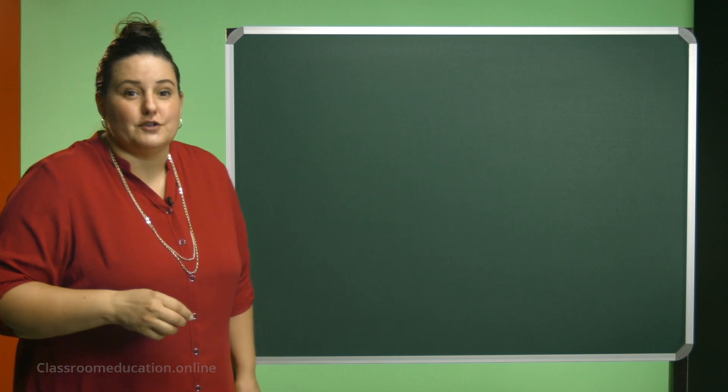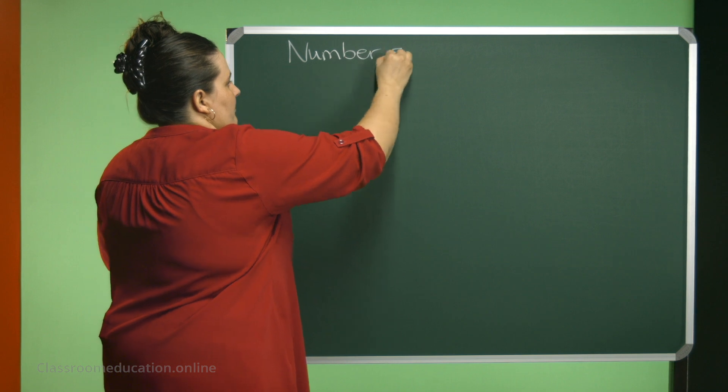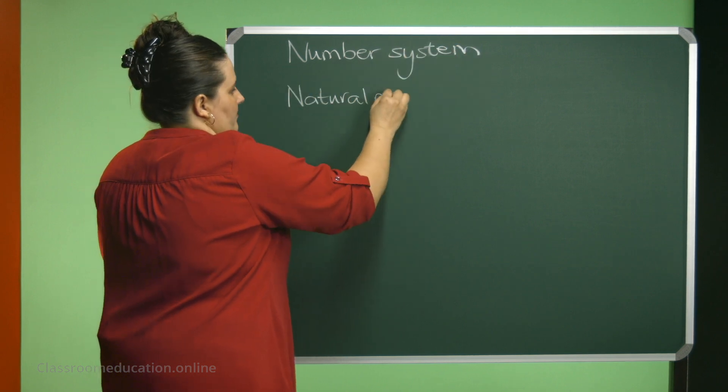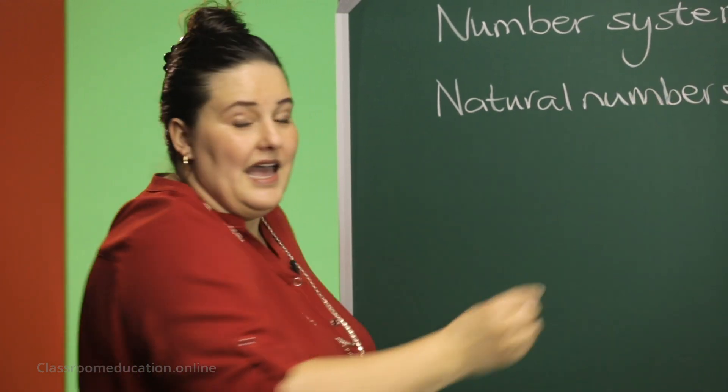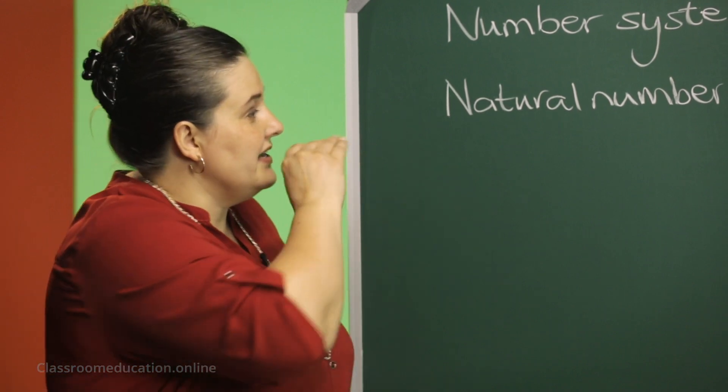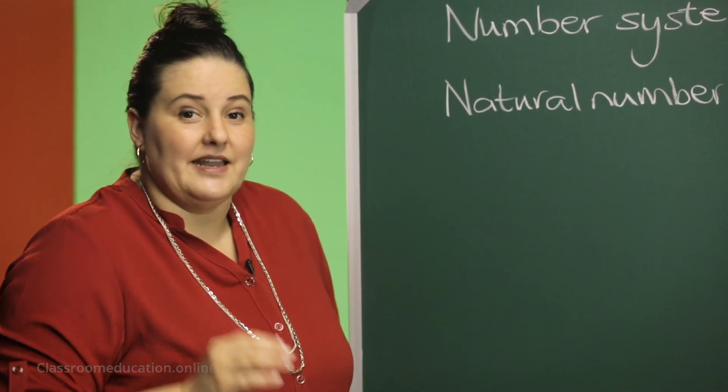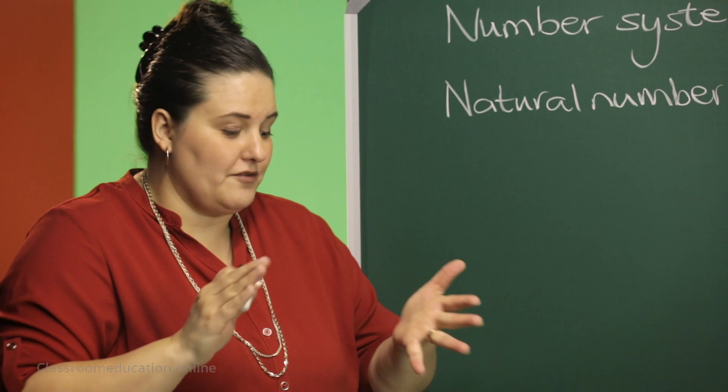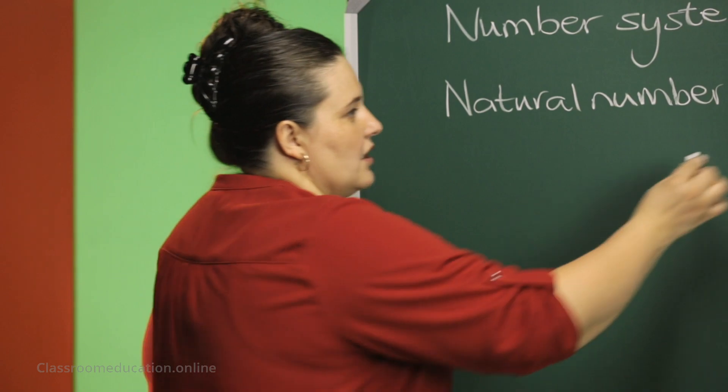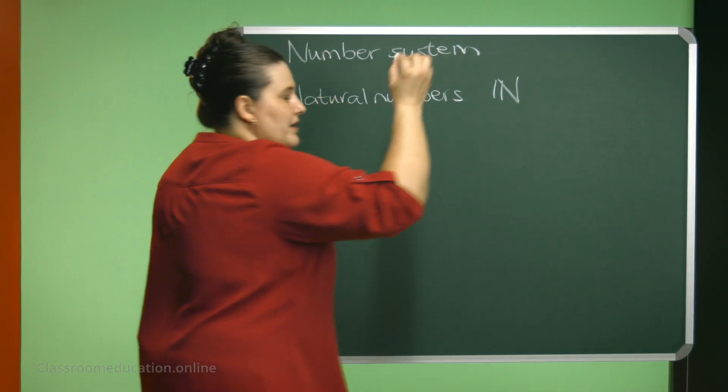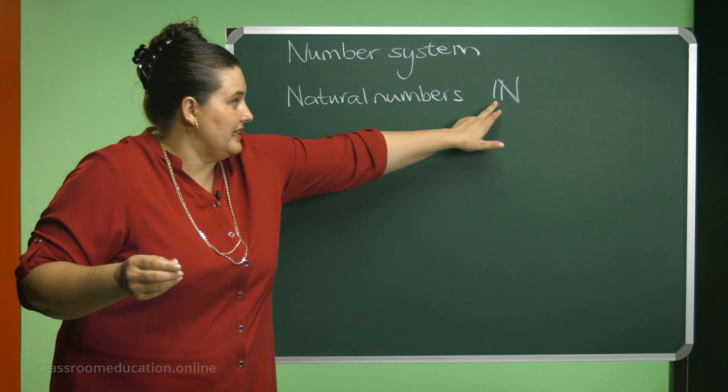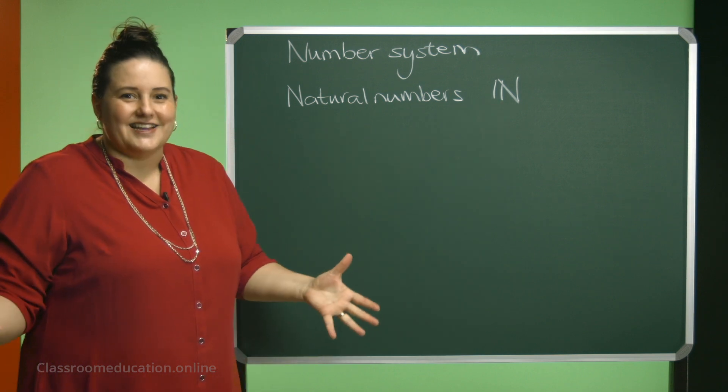Let's have a look at the first one. Our first type of numbers that we get in our number system are natural numbers. And natural numbers, every time I'll give you the symbol and I'll also give you the set of where those numbers are. So when we talk about the natural numbers, we make an N with a double line like that.